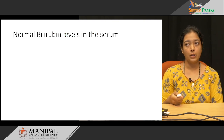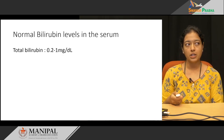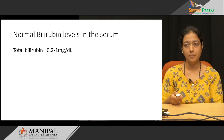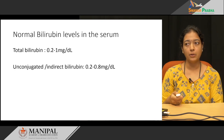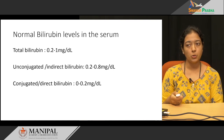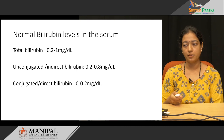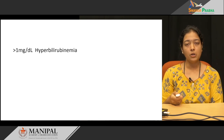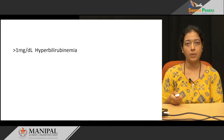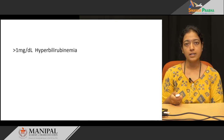The normal level of bilirubin in the serum: total bilirubin concentration is 0.2 to 1 mg/dL. Unconjugated bilirubin, also called indirect bilirubin, is 0.2 to 0.8 mg/dL, and conjugated bilirubin, also known as direct bilirubin, is 0 to 0.2 mg/dL. When the total bilirubin concentration increases more than 1 mg/dL, the condition is called hyperbilirubinemia.